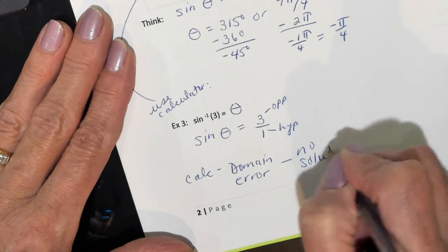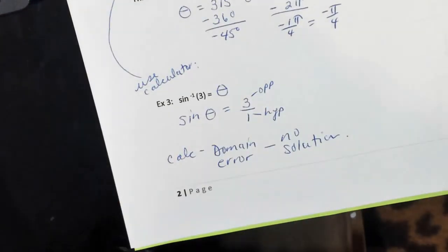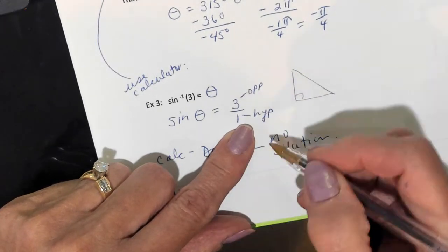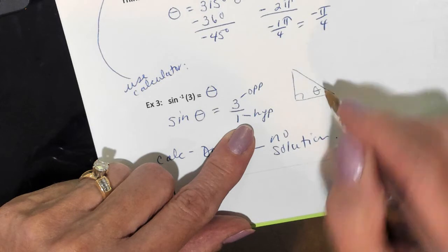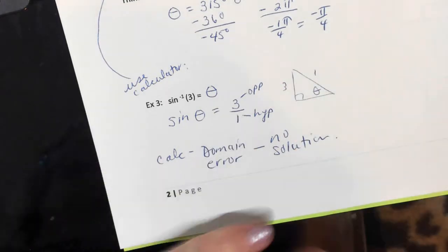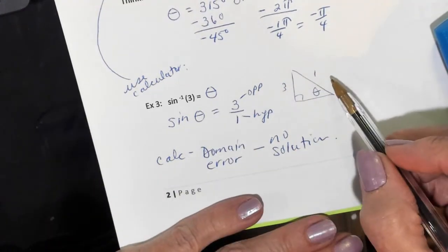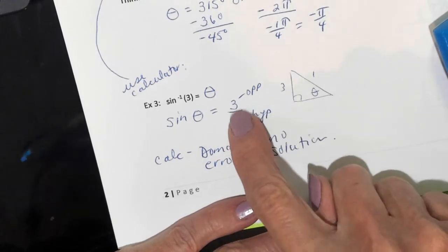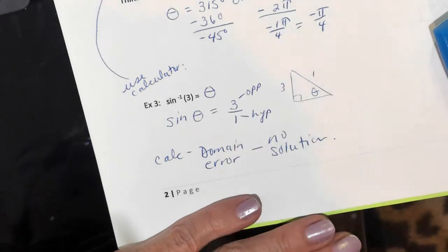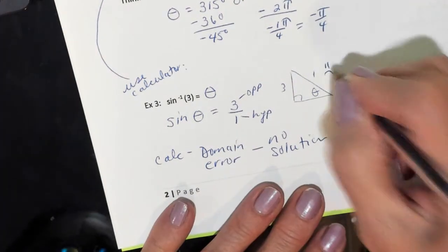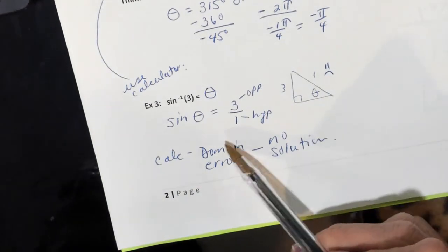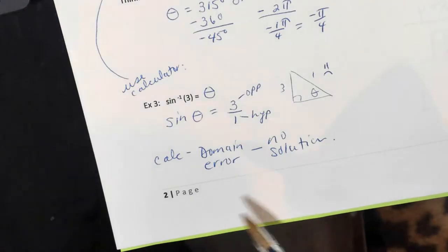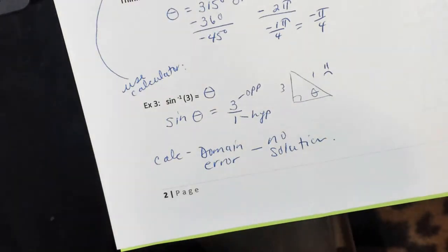Why is this not working? If you have a right triangle, sine is opposite over hypotenuse, and the hypotenuse is always the longest side. So saying the opposite is 3 and the hypotenuse is 1 means the hypotenuse is the short side — that's impossible. That's why your calculator says domain error: what you put in makes no sense.